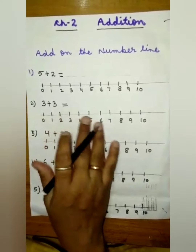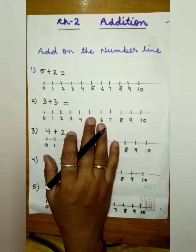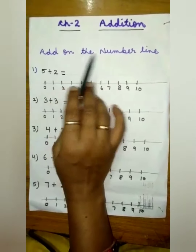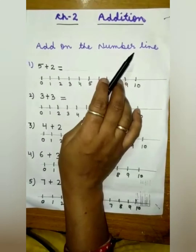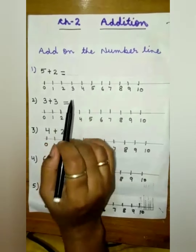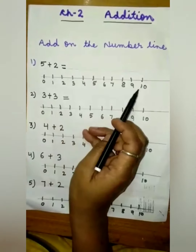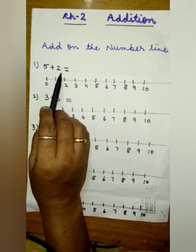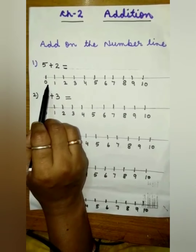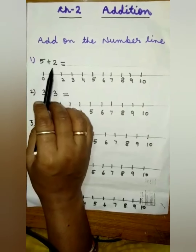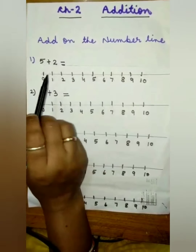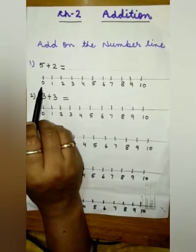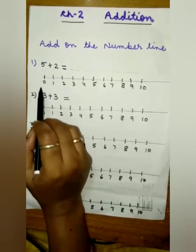Now start Chapter 2 in your book. The first topic is addition on the number line. In this topic we will learn how to add numbers on the number line. See the first example: 5 plus 2. How will you do addition on the number line? The first number is 5. We will start from zero first.